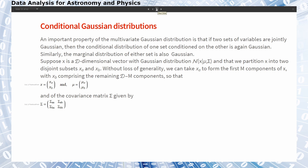Suppose x is a d-dimensional vector with a Gaussian distribution given a certain mean vector and covariance matrix. We partition x into two subsets, xa and xb, where xa is the first m components of x and xb is the remaining d-m components. This also gives us the partitioned means mu_a and mu_b.